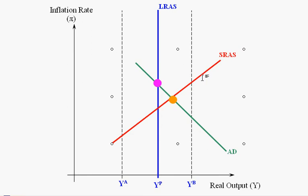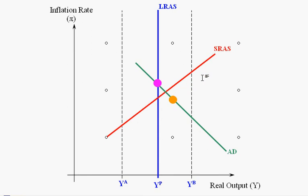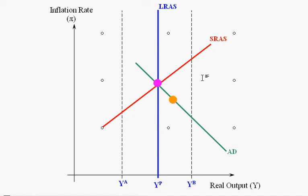The SRAS goes higher and higher until it reaches this long-run equilibrium point, and now the orange dot overlaps with the pink dot. The economy has restored its long-run equilibrium.